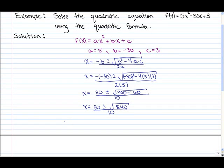So here we have two answers. One would be 30 minus the square root of 840 all divided by 10, and the other answer would be x equaling 30 plus the square root of 840 all divided by 10.